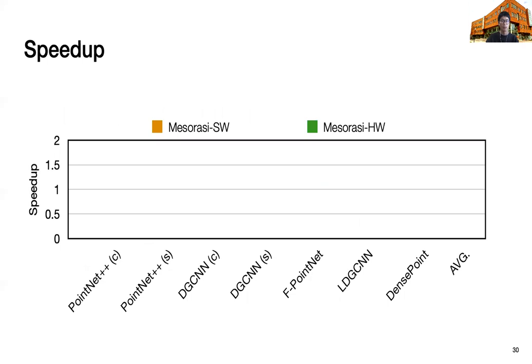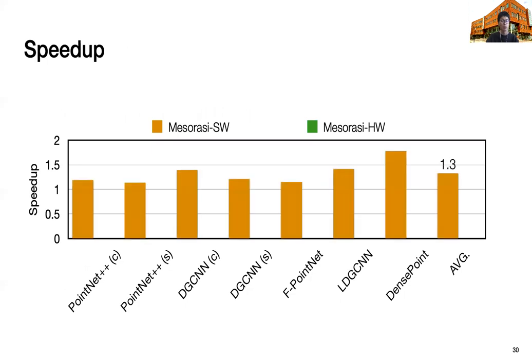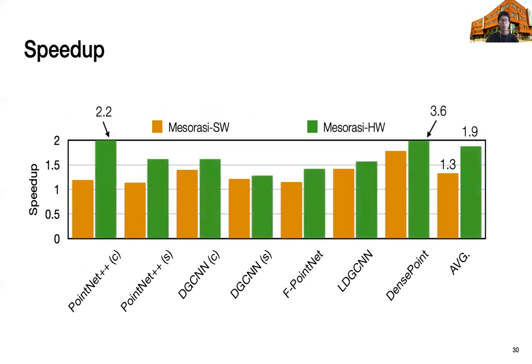Here, we show speedup. Again, the x-axis shows different networks, and y-axis shows speedup. As we can see, our Maserati software can only achieve 1.3 times speedup. With additional hardware support, our Maserati hardware can achieve 1.9 times speedup.